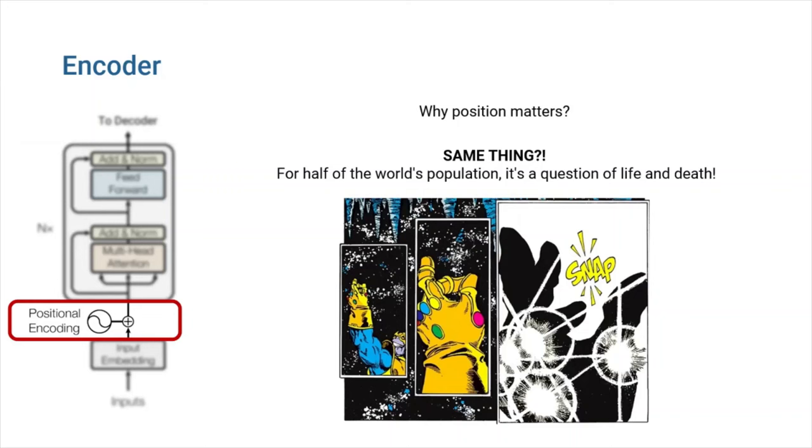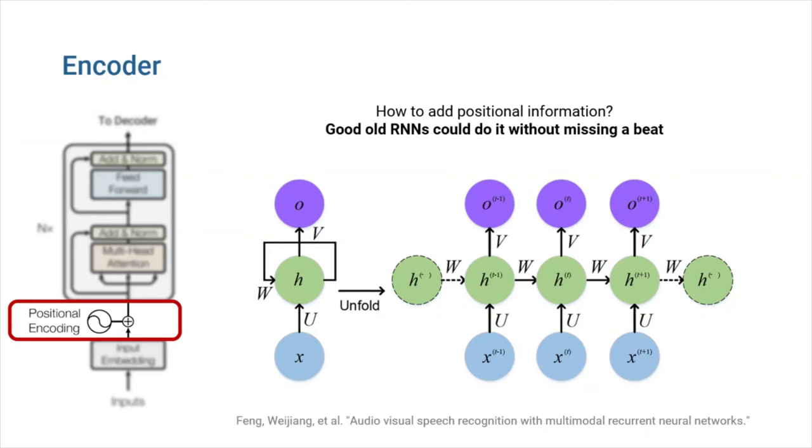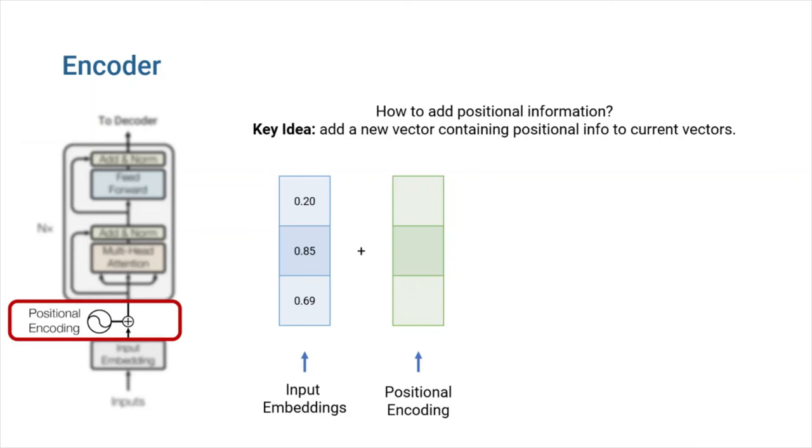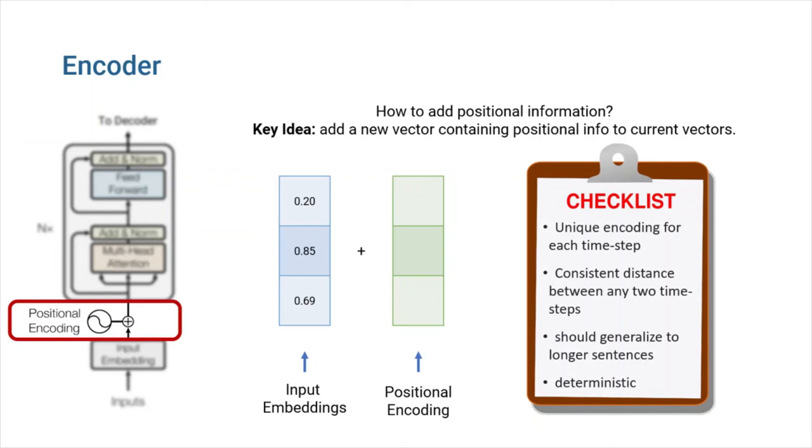Recurrent neural networks inherently take the order of words into account. They parse a sentence word by word in a sequential manner. This will integrate the word's order in the backbone of RNNs. How can we add some information regarding word order? Know that we are removing RNNs for the benefit of parallel computation and increased speed. In transformer, Vaswani and co-authors try to add positional information by using the sum of current embedding vectors with a new vector that contains information on position of each word.